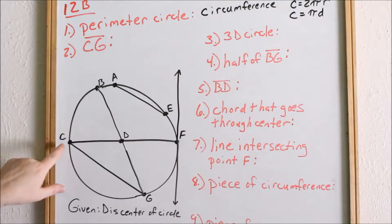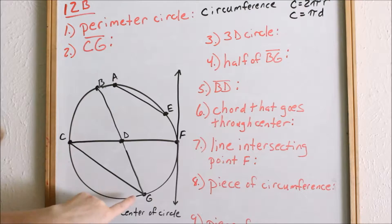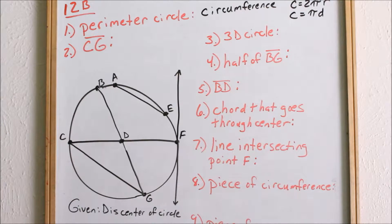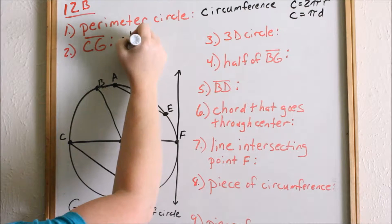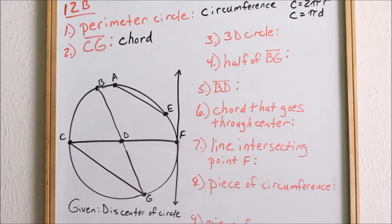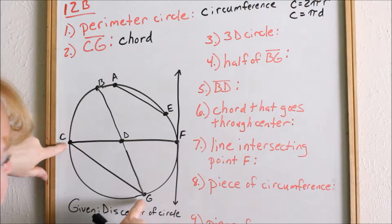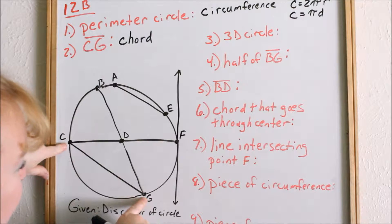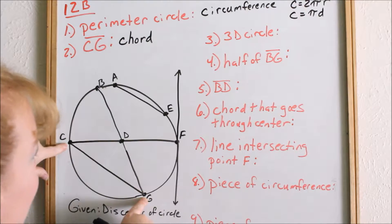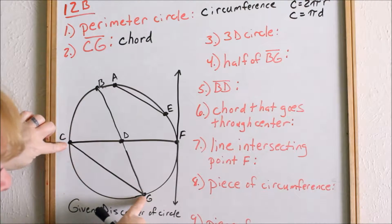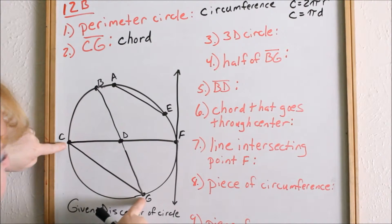The line segment CG, from C to G — what do we call this? It is called a chord. By definition, a chord is a line segment — this is very important — a line segment that touches two points of the circumference on a circle. Line segment CG is called a chord.